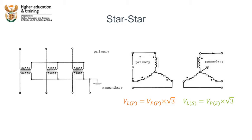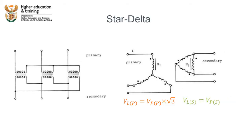We can also connect the transformer as a star-delta. In this instance, the primary side is connected in a star formation and the secondary side is connected in a delta formation. On the primary side, the line voltage equals the phase voltage multiplied by the square root of three. On the secondary side, the line voltage equals the phase voltage, because the secondary side is connected in a delta configuration.